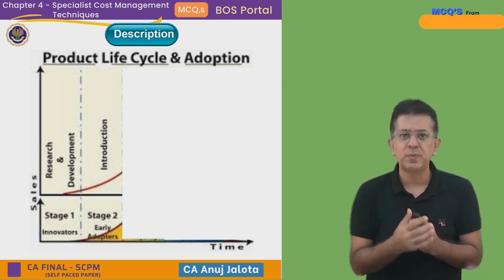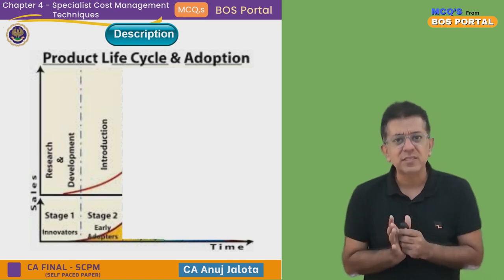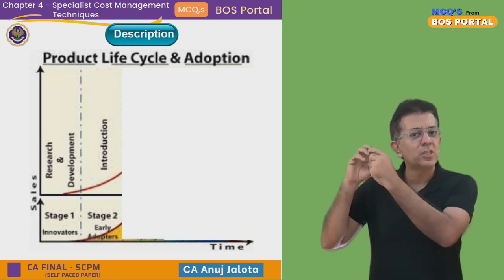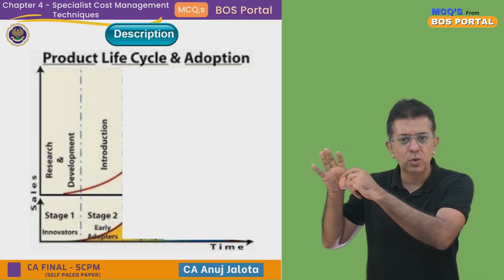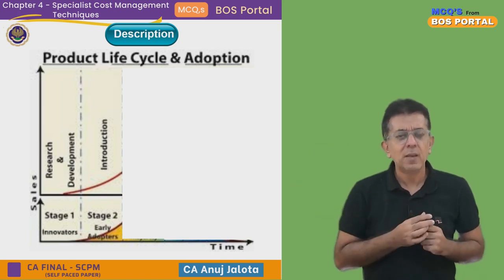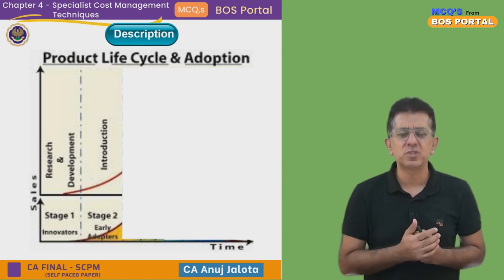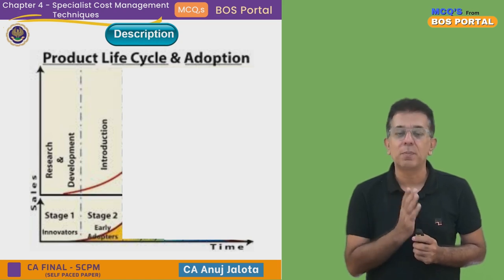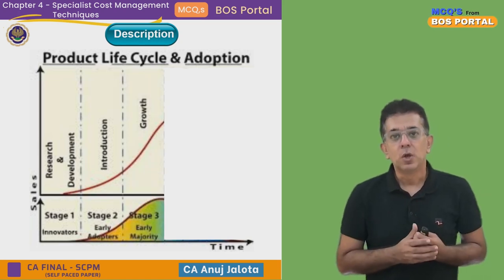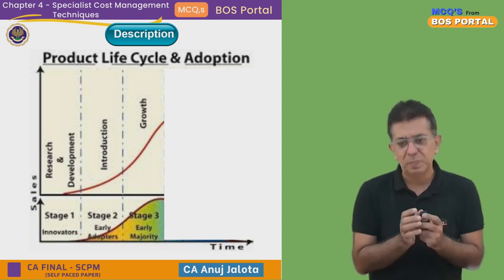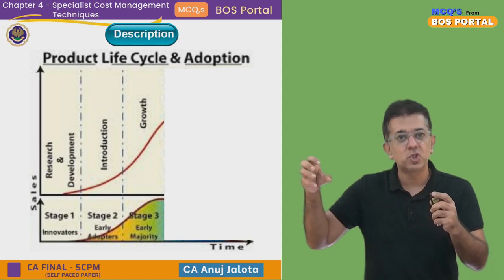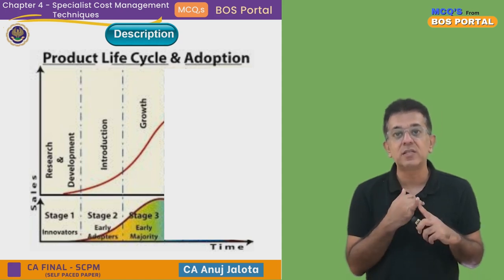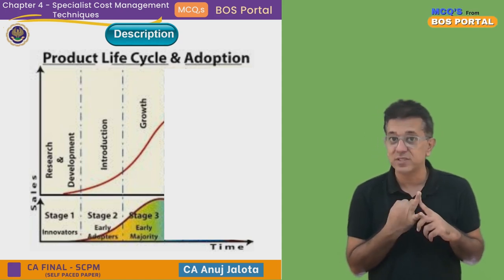At the introduction stage, competition is very low. Not many people know about the product, and established players are already selling. This stage is usually marked by losses or very small profits. Then things start to pick up — that is the Growth Stage. In the growth stage, early adopters spread word about the product to others, and our growth story begins: sales are increasing at a very high rate and profits are increasing at a very high rate.